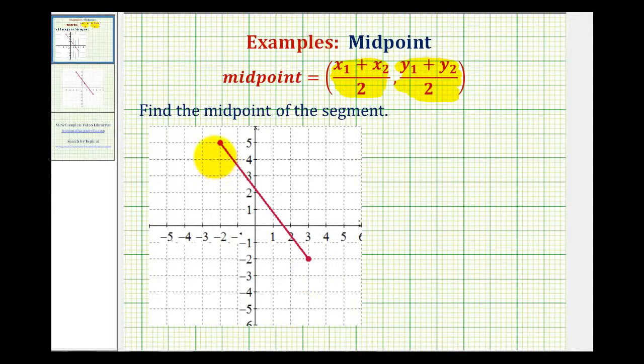Looking at our segment here graphed on the coordinate plane, this endpoint has an x coordinate of negative two and a y coordinate of five, and this endpoint has an x coordinate of positive three and a y coordinate of negative two.